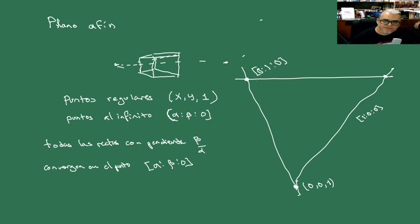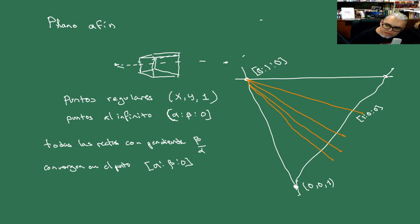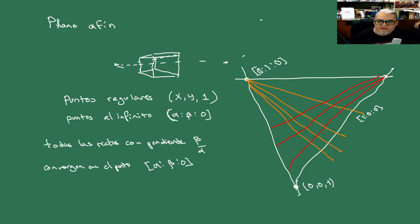Todas estas rectas que pasan por acá, y las rectas rojas que pasan por este punto, son todas paralelas. Esto de aquí nos está formando una retícula. Vamos a hacerla con más cuidado de este otro lado: marcamos nuestra recta al infinito, marcamos nuestros ejes, y vamos a hacer una retícula.